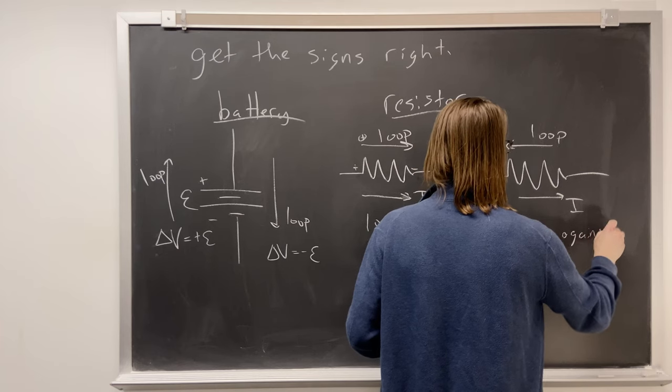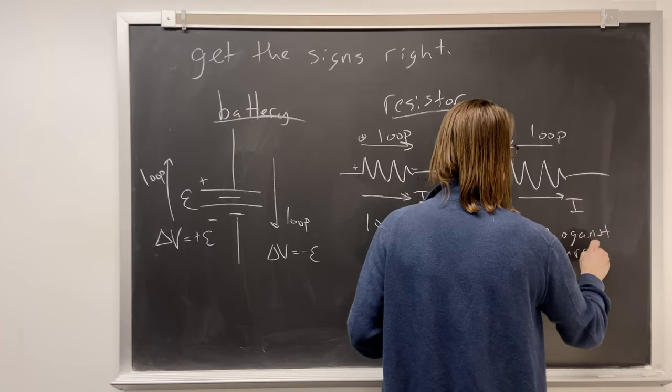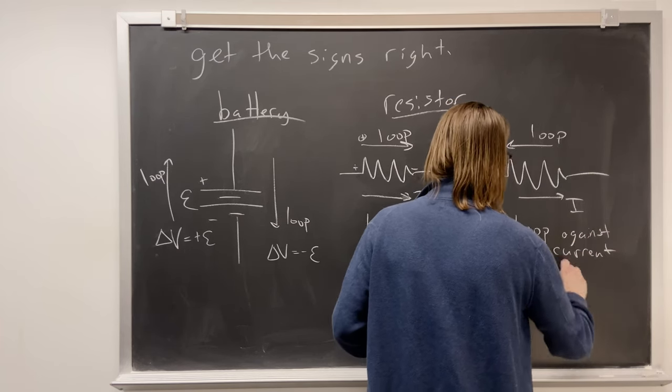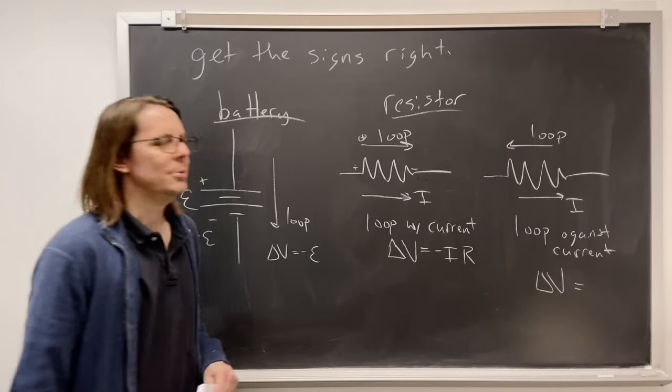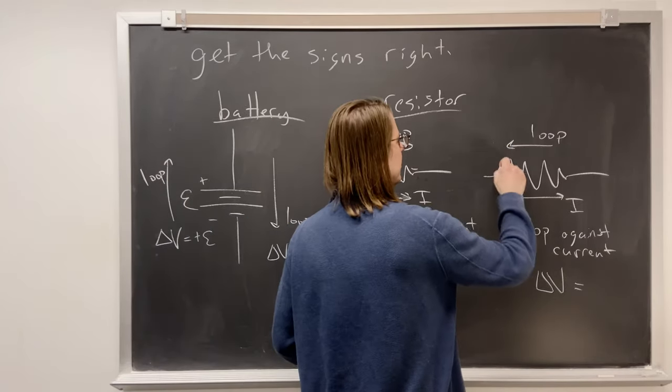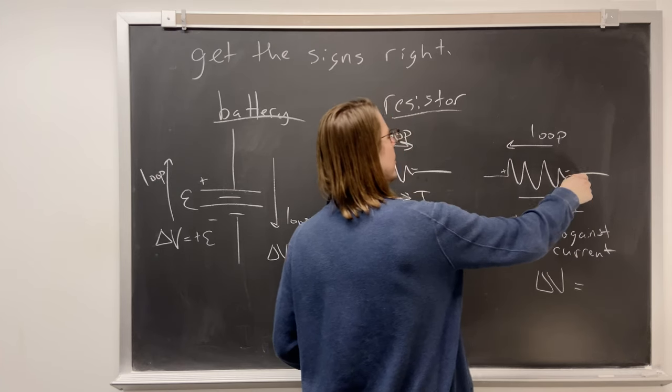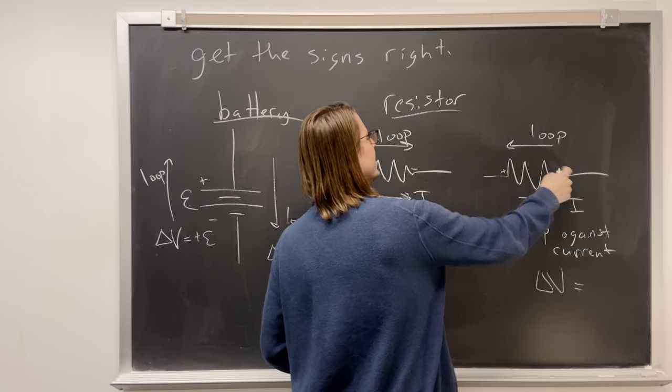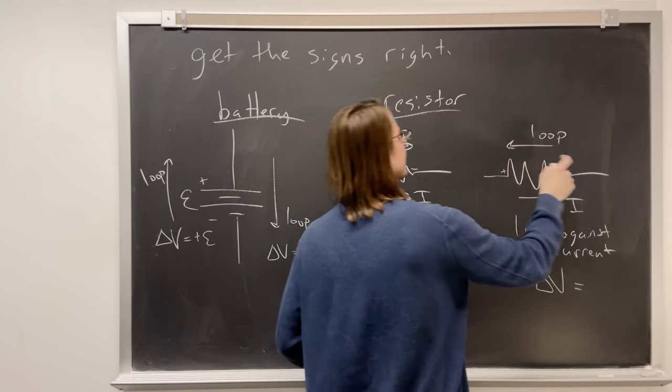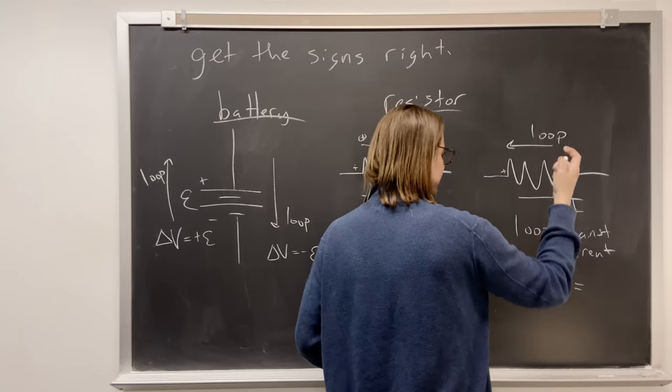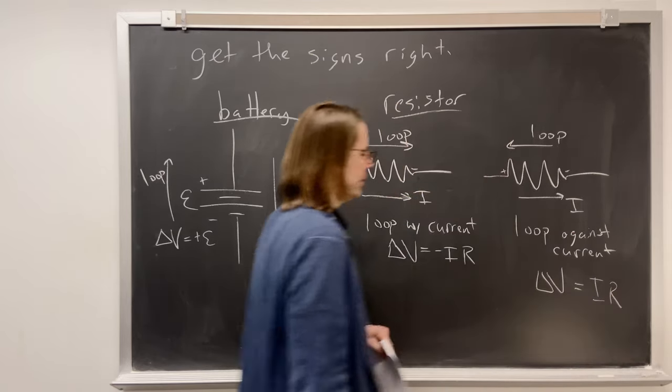Loop against the current. Then what will delta V be? Yes, it will be positive. Because we know the current flows from high to low. We're looping from low potential to high potential. Differences are final minus initial, high minus low is positive IR.